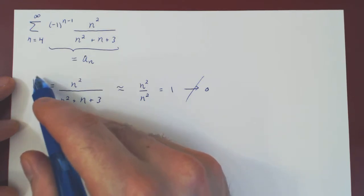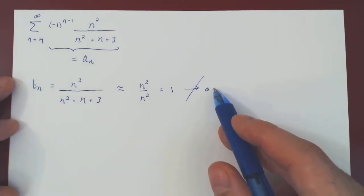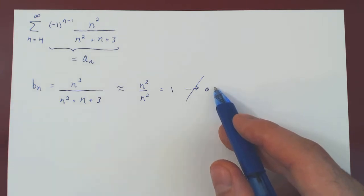As n goes to infinity, bn does not shrink to zero, therefore, the alternating series test fails.